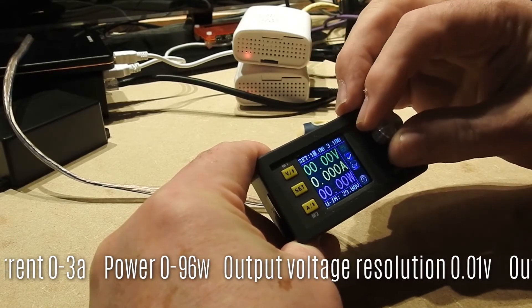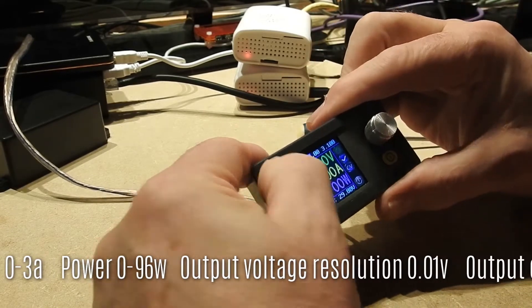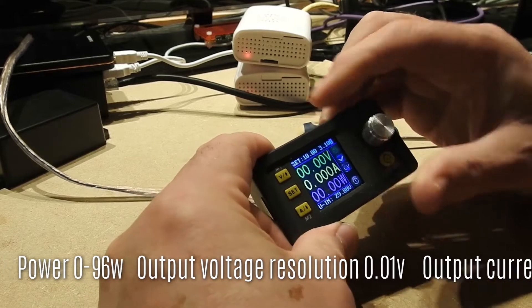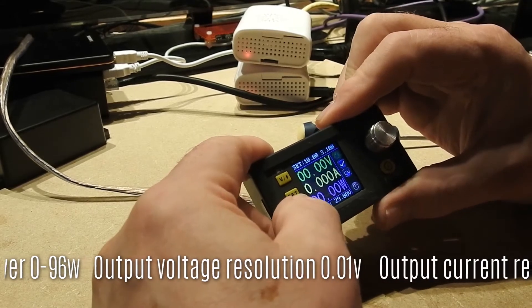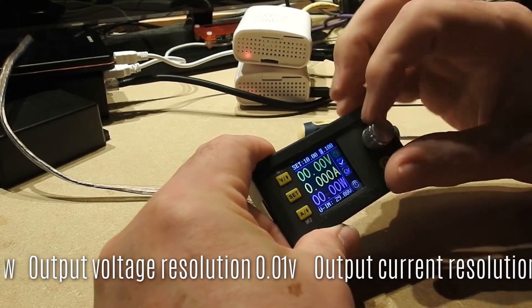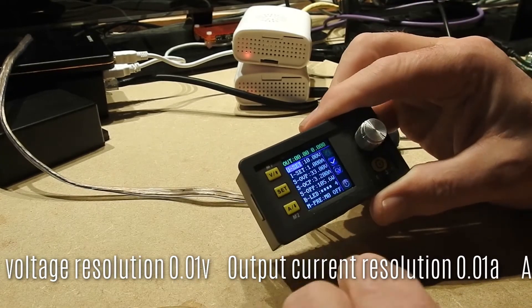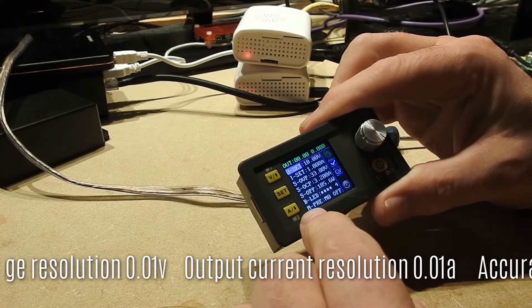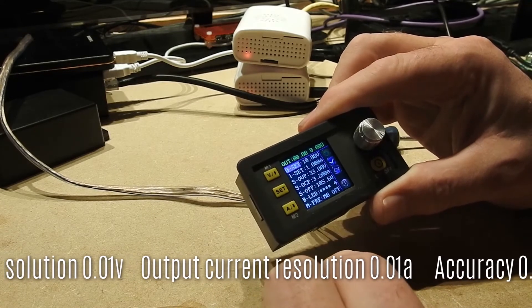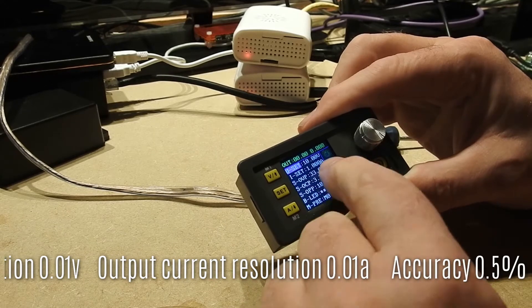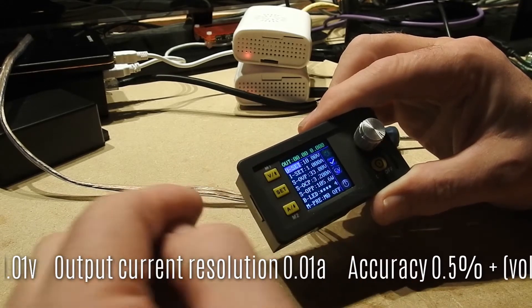And a current limit, which we'll set to 1 amp. And just like the 5030, you have 10 memories. You can set the brilliance of the display and other features with the simple set menu there.